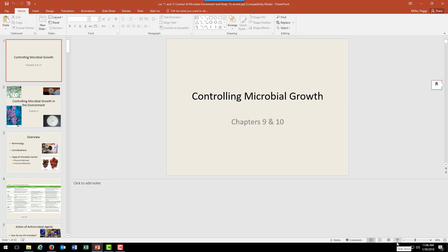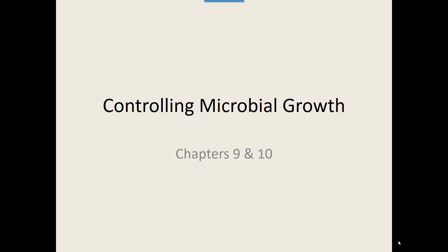This PowerPoint covers both chapters 9 and 10, which both deal with controlling microbial growth. Chapter 9 covers controlling microbial growth in the environment — killing bacteria on surfaces and other substances. Chapter 10 is about controlling microbial growth in the human body, where you obviously wouldn't want to spray disinfectant. A little different area, but the same basic idea.